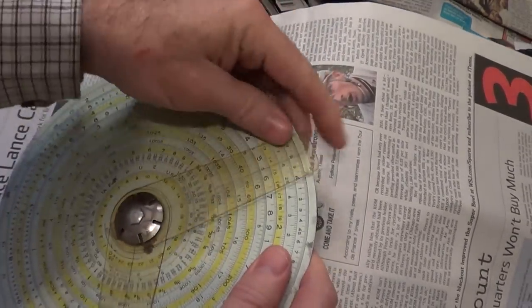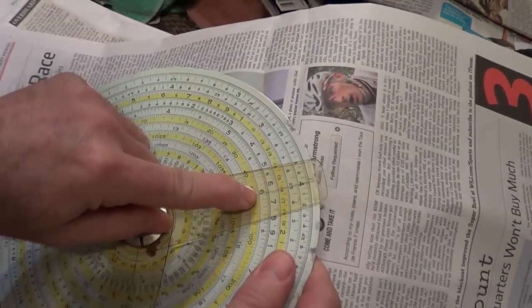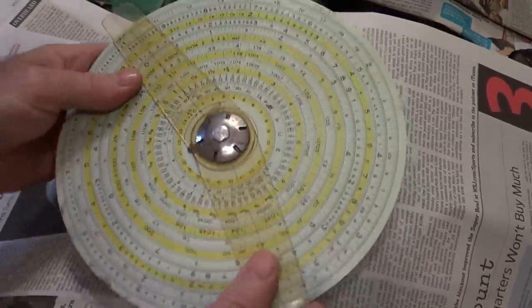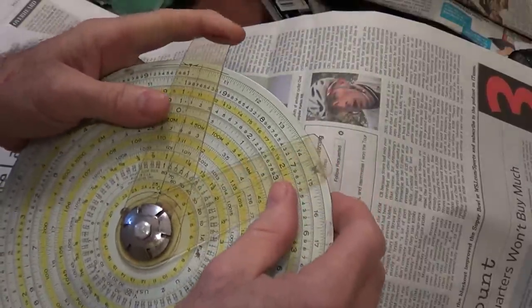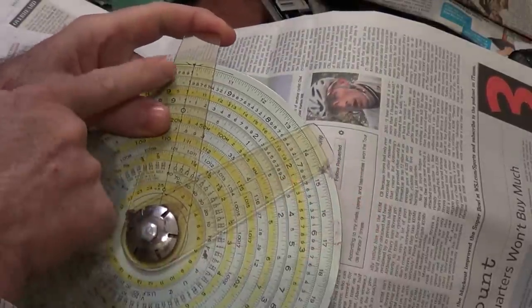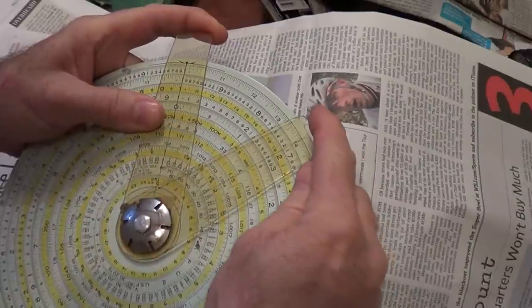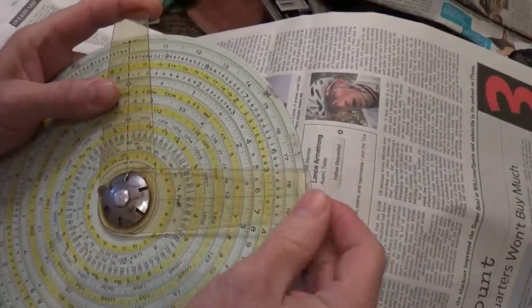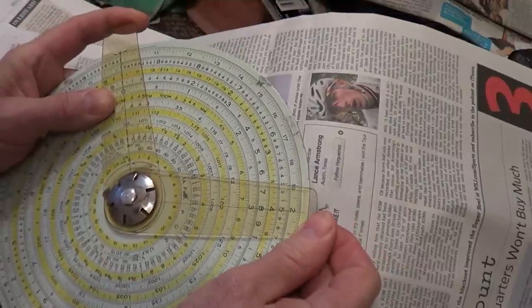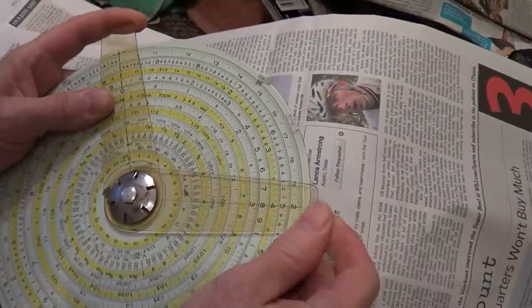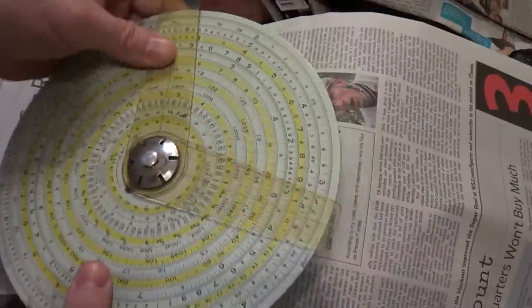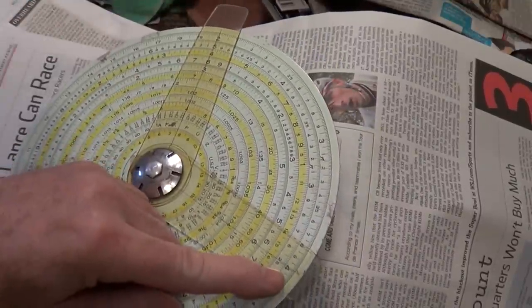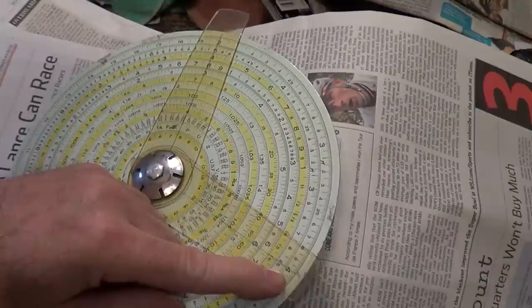The way this works is to multiply, we're basically adding logarithms. So if you put this cursor on the one here and you use the outer C scale, and say I added this to the two here, and I slide the larger cursor over to the lines on the two, this reads on a four. So two times two is four.